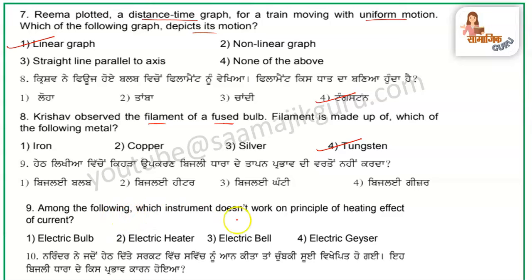The next question: among the following, which instrument does not work on the principle of the heating effect of current? When current is applied, the device becomes warm. The answer is electric bell, as it does not work on the heating effect of current.